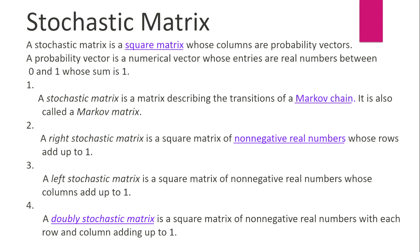A stochastic matrix is a matrix describing the transition of a Markov chain. It is also called a Markov matrix. A right stochastic matrix is a square matrix of non-negative real numbers whose rows add up to 1.